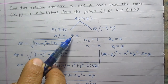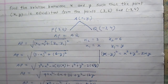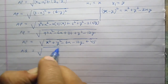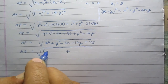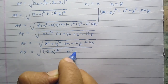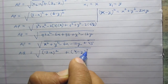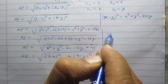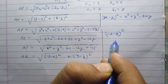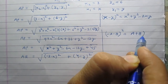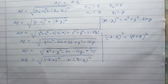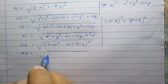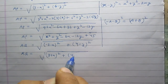We are given that AP equals AQ, so now we need to find the distance AQ. Using the same distance formula, AQ equals the square root of (minus 3 minus x) whole square plus (4 minus y) whole square. We know that (minus a minus b) whole square equals (a plus b) whole square, so AQ equals the square root of (3 plus x) whole square plus (4 minus y) whole square.